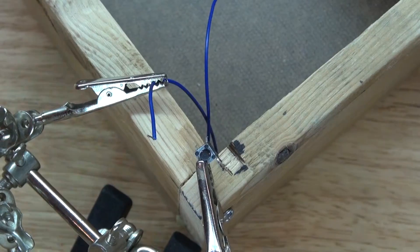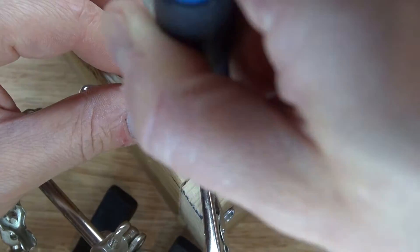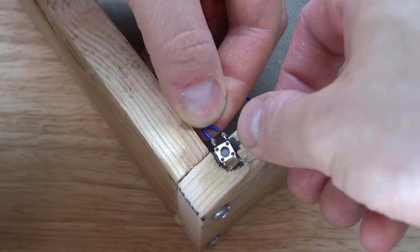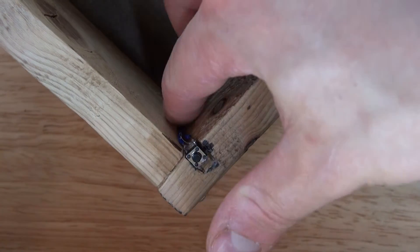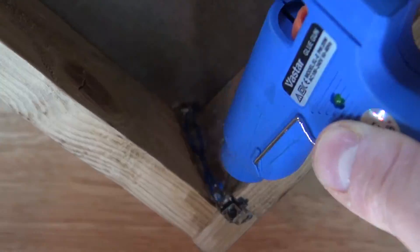Now I'm going to take these wires and I'm going to go ahead and solder them to the switch. Put tension on the wire a little bit and then glue the wire into place.